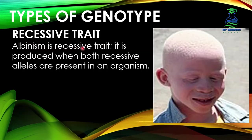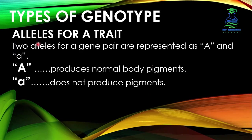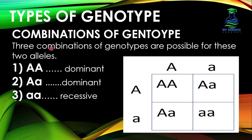Albinism is a recessive trait. It is produced when both recessive alleles are present in an organism. Two alleles for this gene pair are represented by capital A and small a. If the capital A allele is present, then normal body pigments will be produced. If the recessive allele small a is present, then there is no production of pigments inside the body.